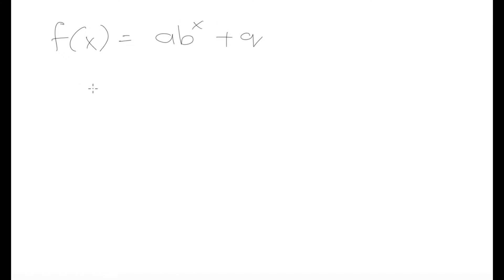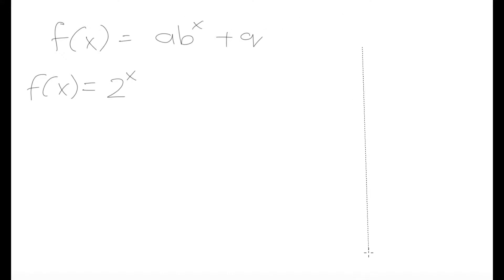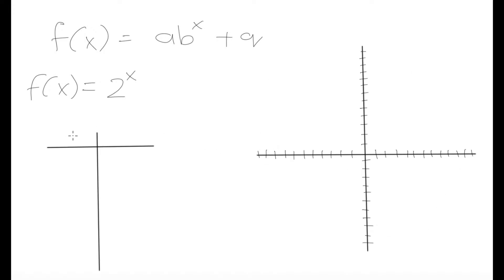Let's take a look at the function f(x) = 2 to the power of x. If we have this function, let's try and see what we would get if we were to graph this. The first thing we can do is set up our Cartesian plane, and I'm going to plot this graph by determining some x and y points.